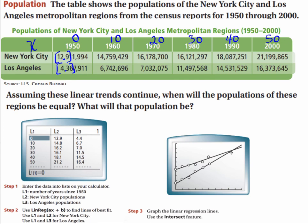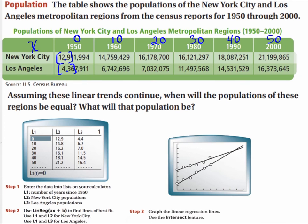Once you graph it, you're going to use your intersect feature — and we'll practice some of this in class. When you do that, you're going to come up with a point right here at about x equals 87. That is 87 years after 1950. So 1950 plus 87 is 2037 — meaning in about the year 2037, the populations will be the same.